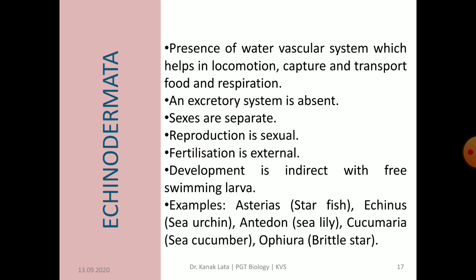There are no excretory organs. Sexes are separate, that is dioecious. Sexual reproduction occurs with external fertilization. Development in Echinodermata is indirect with free-swimming larvae. Common examples of Echinodermata are starfish, sea urchin, sea lily, sea cucumber and brittle star.